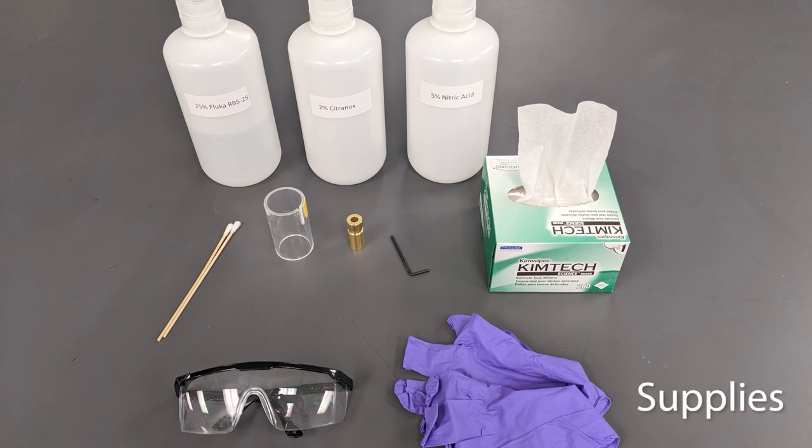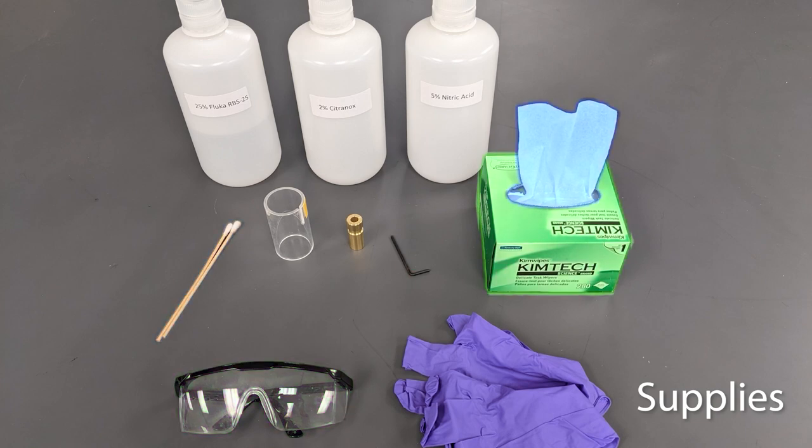For cleaning glassware and cones, you'll need powder-free gloves, goggles, and any other appropriate PPE, cotton swabs, kim wipes, a 2.5 mm Allen wrench, skimmer cone jig, torch positioning jig, and appropriate dilute acids and cleaning detergents.